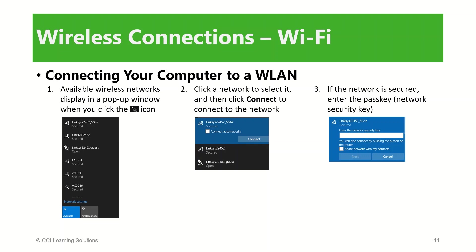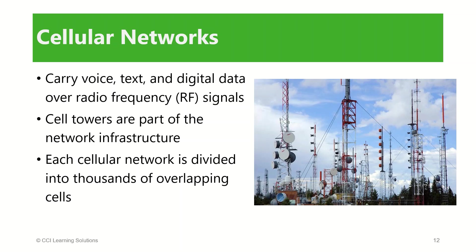Let's move on to cellular networks. Cellular networks carry voice, text, and digital data through the transmitting and receiving of radio frequency, or RF, signals. At its heart, a mobile phone is a two-way radio — it sends and receives signals as it moves through a network of transmitters and receivers. Think of all the cell towers you see as you travel each day. These towers are part of the cellular network infrastructure, owned and operated by cellular carriers or providers.